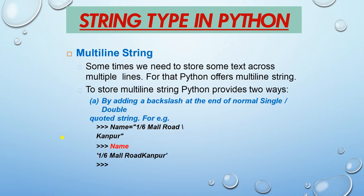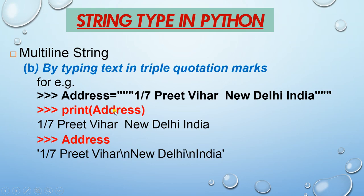Multi-line strings are used when writing multiple lines in a string. For storing a multi-line string, you have two ways. The first is by adding a backslash at the end of the normal single or double quoted string. For example: name = '1/6 Malroad\' then 'Kanpur'. When you put the backslash and press enter, then close the double quote, and print the name, it will appear in a single line without any space.